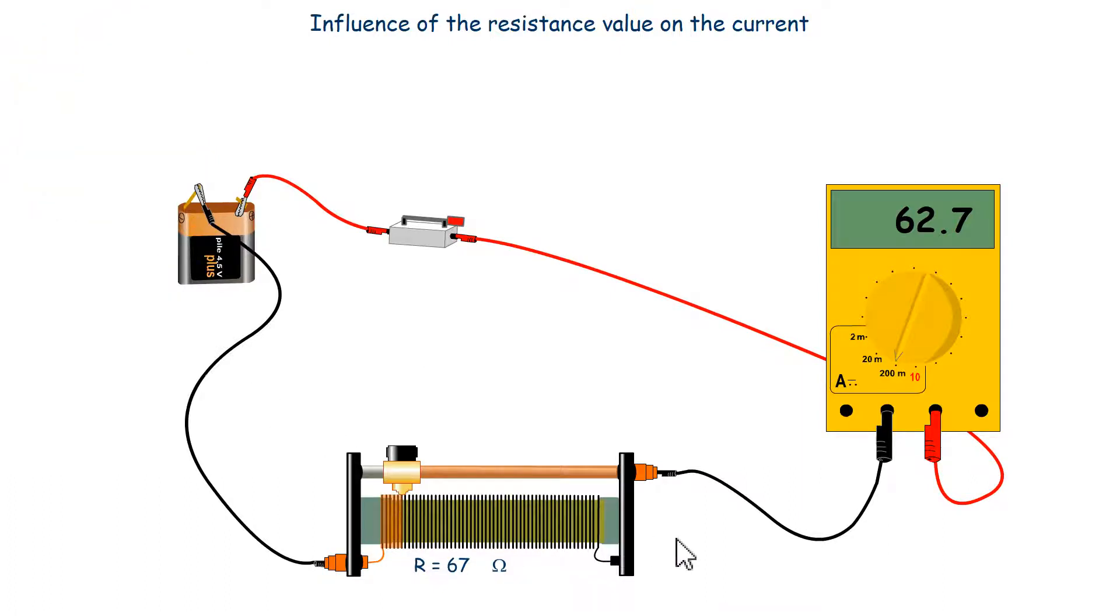If the component's sole function is to resist the passage of current, this is called an ohmic conductor. The associated physical quantity is resistance, which is measured in ohms. If the resistance is adjustable, as is the case here, we speak of a rheostat, and if it is smaller, we speak of a potentiometer.